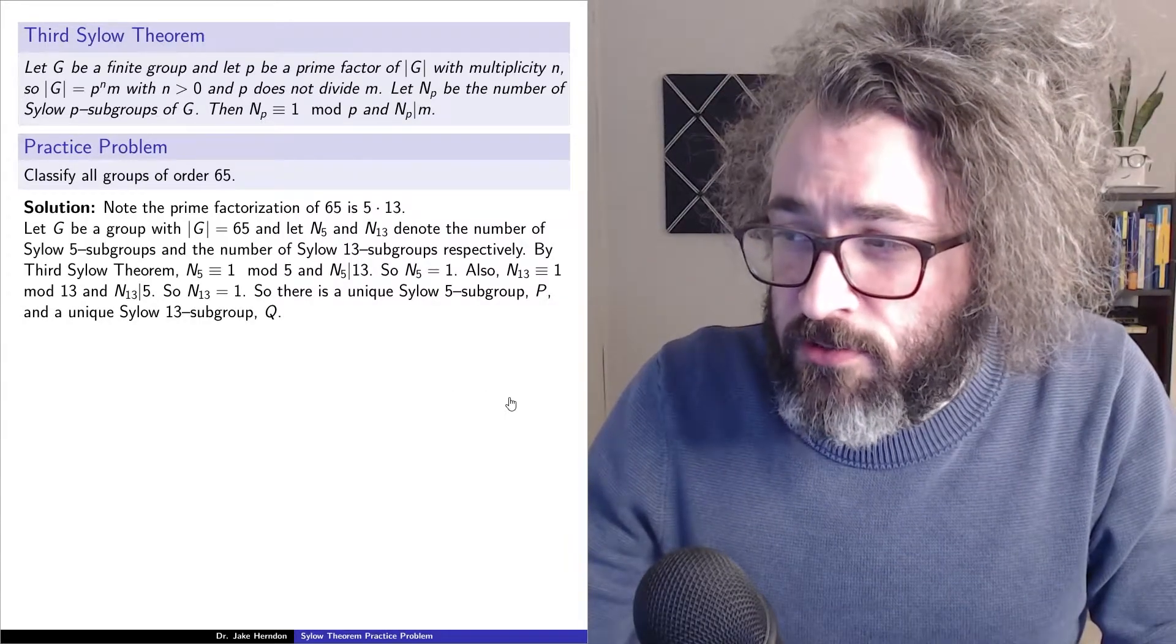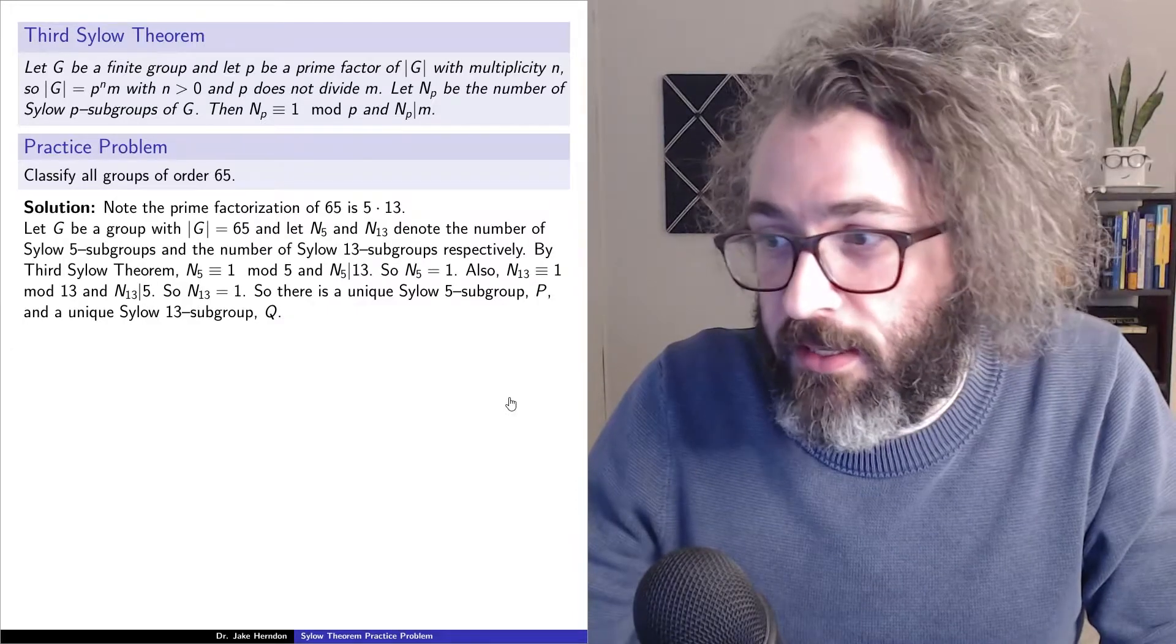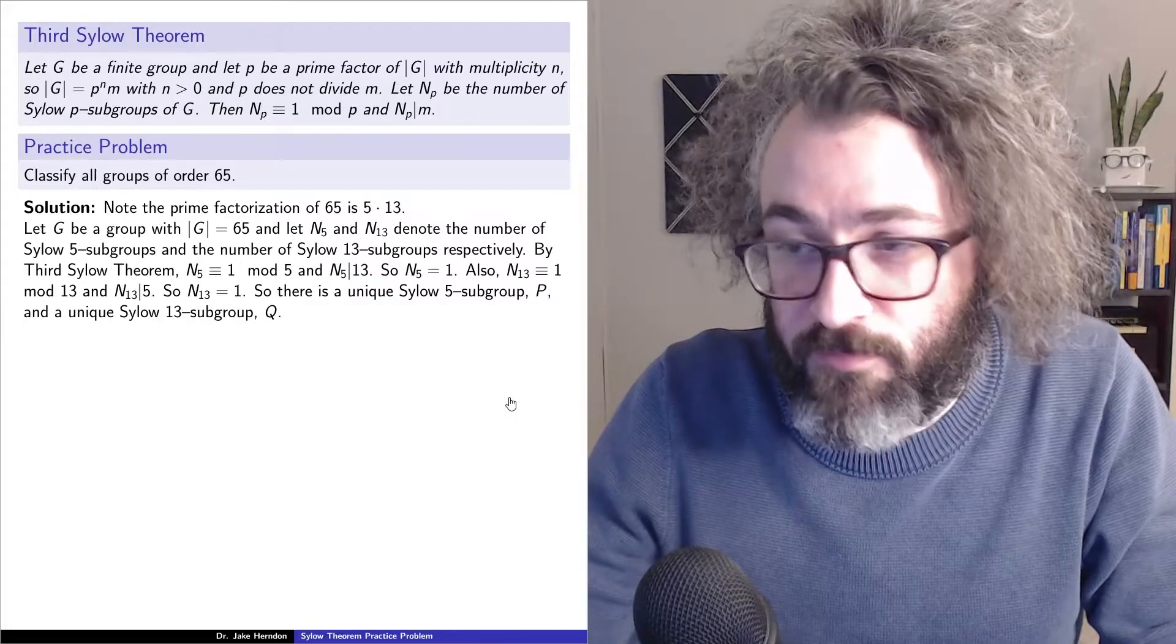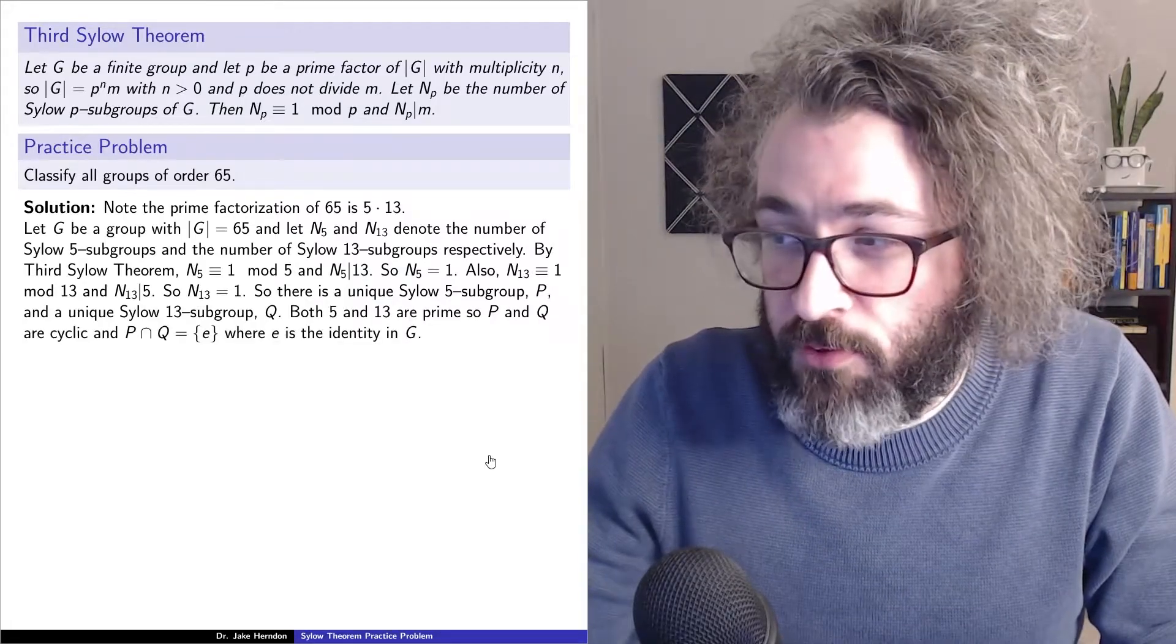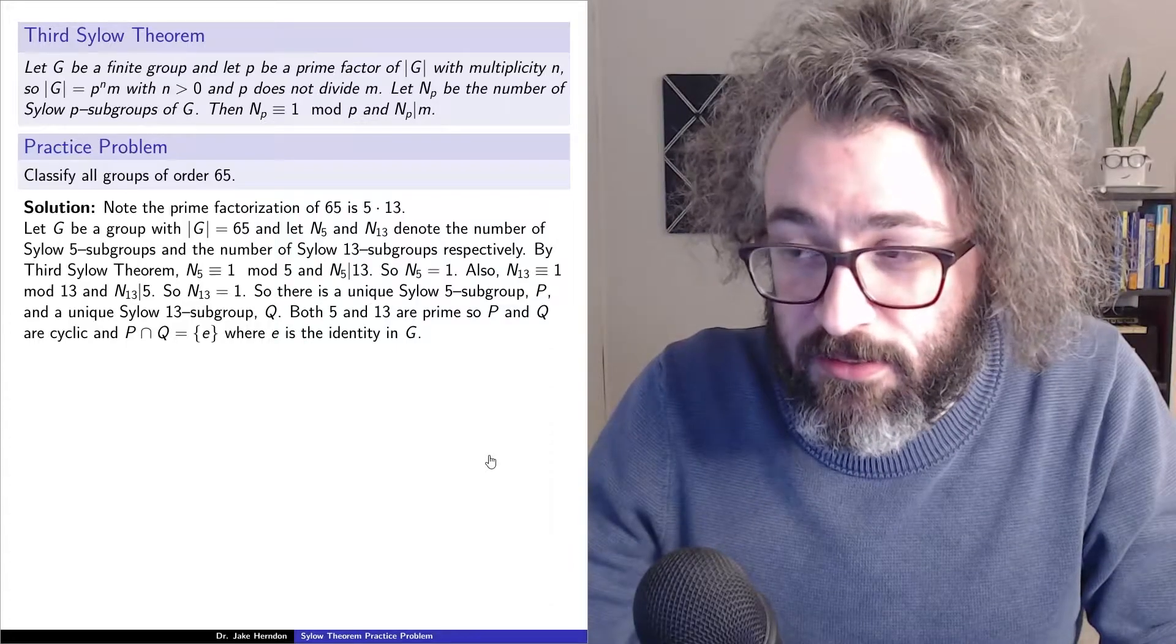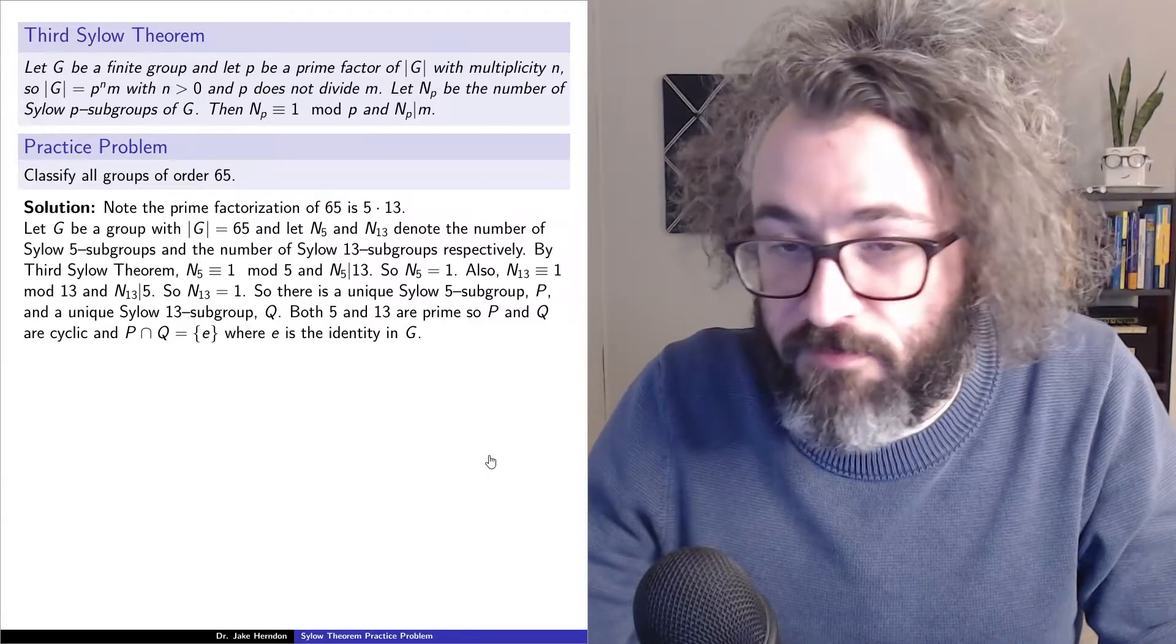So this says there is a unique Sylow 5 subgroup, I'll call it P, and a unique Sylow 13 subgroup, I'll call it Q. Both 5 and 13 are primes, so P and Q are cyclic, and P intersected with Q is the trivial subgroup of G.